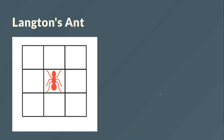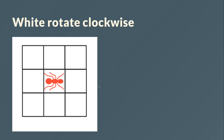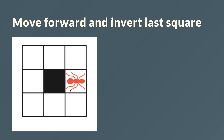First I'll explain what Langton's Ant is about. It is a cellular automaton. You have a red ant on a grid — which is in theory endless — and there are basically only two rules. When the ant is on a white cell it rotates clockwise, then it moves forward and inverts the cell.